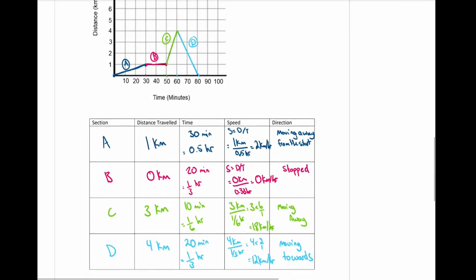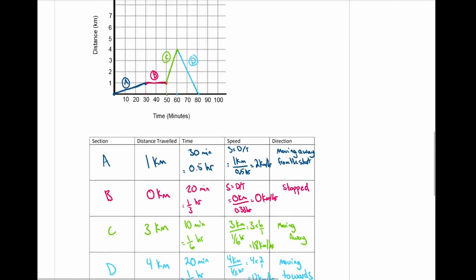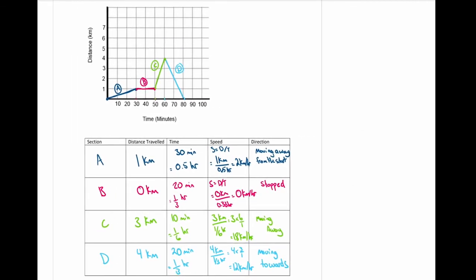That was a quick summary of distance-time graphs. Read the situation carefully, understand what it's representing, and know your reference point. A positive slope means moving away; a flat or horizontal line means stopped; a negative slope means moving towards. For each section, look at that section only — don't compare it to the overall graph.